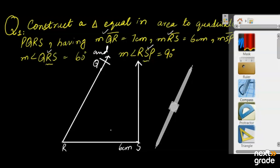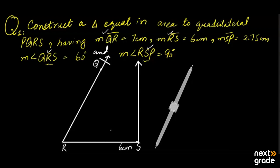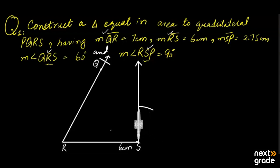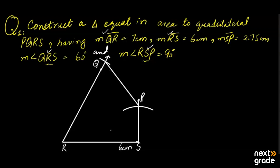Now we are going to mark SP. SP is 2.75 cm. You can see that the 0.75 scale doesn't exist exactly, but approximately 2.7 to 2.8. After marking SP, you can see that we now have the complete quadrilateral shape.